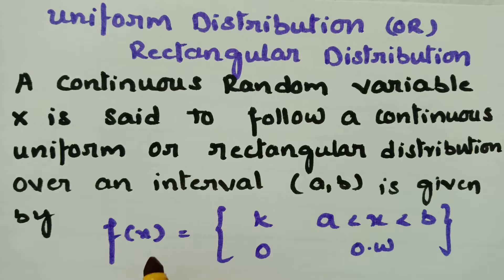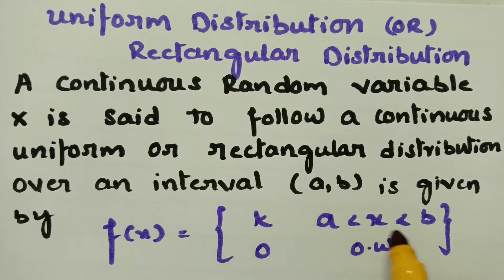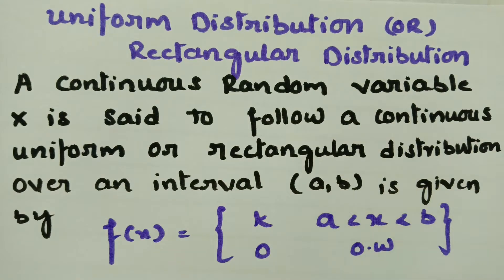The probability density function f(x) is given as a constant value k when x lies between a and b, and 0 otherwise.